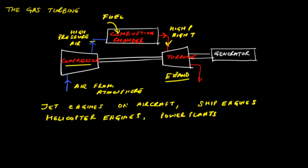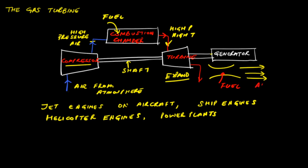These combustion products enter the turbine where they expand and do work. This work is partly used to run the compressor via a shaft coupling, and the remainder runs a generator to produce electricity. In aircraft, there is no generator; instead, the gases are expanded just enough to run the compressor and the rest is expanded through a nozzle, producing a high velocity jet that generates thrust. In jet engines, additional fuel can be added and burned in the afterburner section to provide additional thrust.